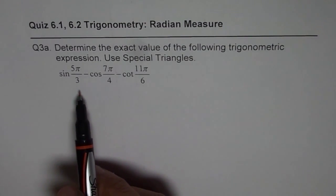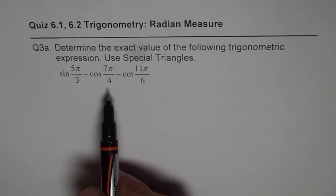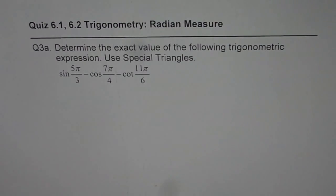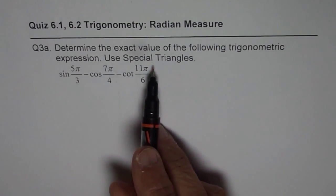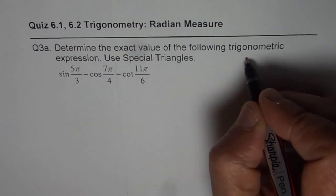Sine of 5π/3 minus cos 7π/4 minus cot 11π/6. Now, when you have to find exact values, it is good to draw the special triangles. So, let's begin by drawing them.